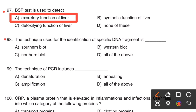Next one. The technique used for the identification of a specific DNA fragment is dash. Option A, Southern blot. Option B, Western blot. Option C, Northern blot. Option D, All of the above. The right answer is Option A, Southern blot.